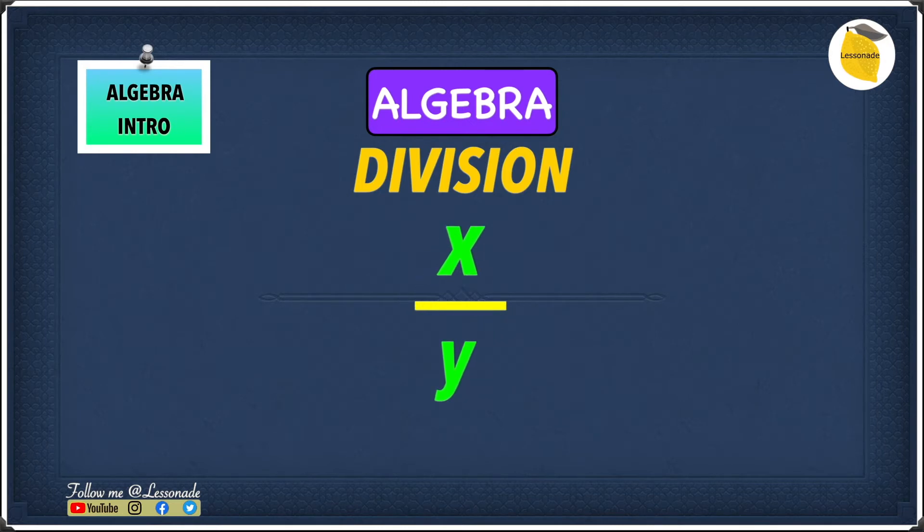You instead write it in a fraction form, so x over y. That's how you write it in algebra, because at the end of the day, a fraction is a division.